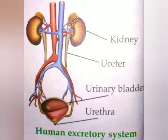Urine remains stored in the urinary bladder until it is released from the body. The urethra is also a small tube-like structure which lets out the urine from the urinary bladder and out of the body. In this way, waste is removed from our body in the form of urine.